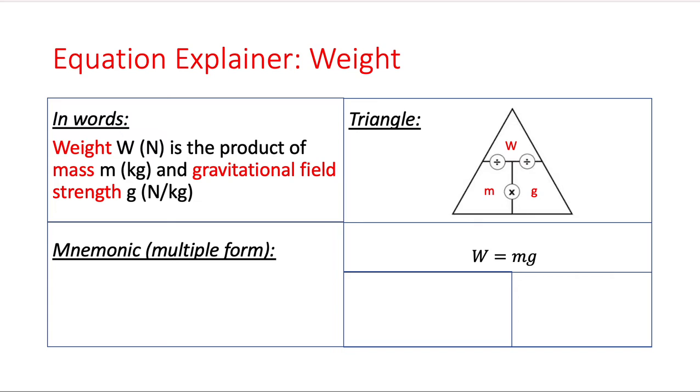This first one is W equal to mg, and I'm going to call this the multiple form. Generally I find the multiple form the easiest one to remember because we don't need to worry about what we're dividing by what. We know that the first thing is the product of the second two, so we've got W equal to mg. However, you may be asked to calculate, for example, m—well that would be W divided by g. When you look at this triangle you see W is above g, and similar, g is W by m. Obviously you don't need to remember all of these—one of them is enough. If you can remember one of these forms then you can work out the other ones by doing a simple bit of rearrangement.